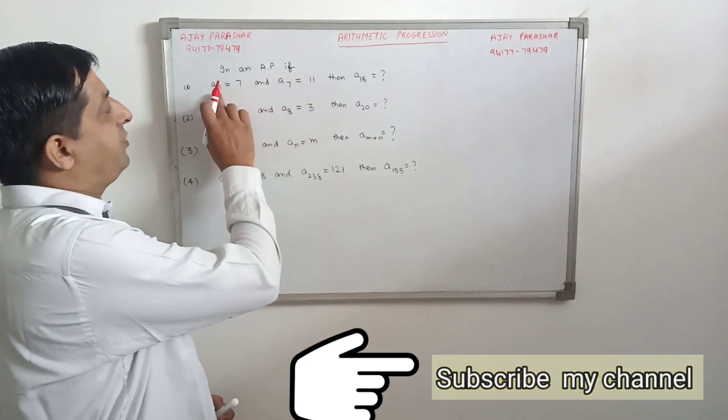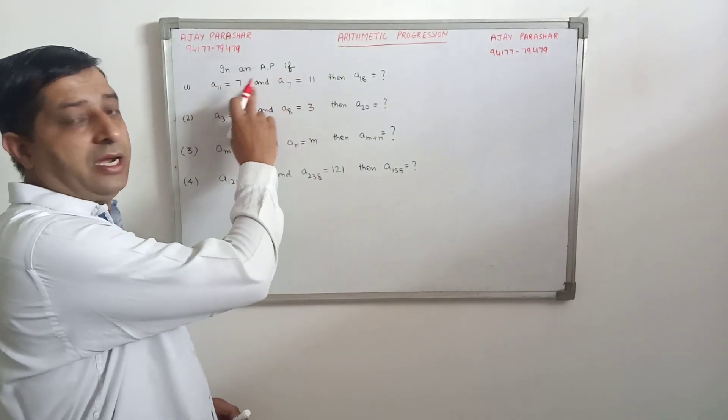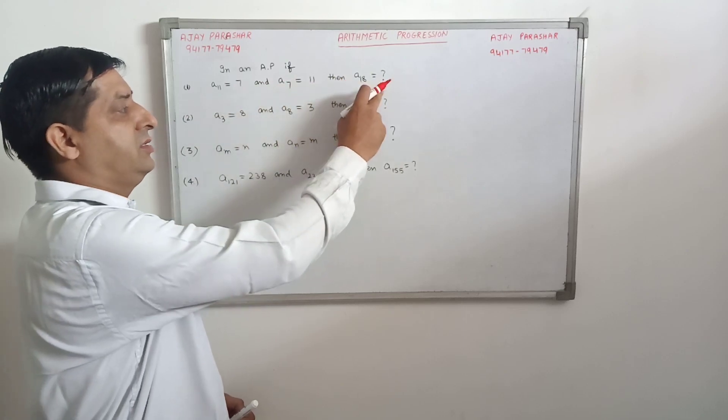In an AP, if 11th term is 7 and 7th term is 11, then what is 18th term?